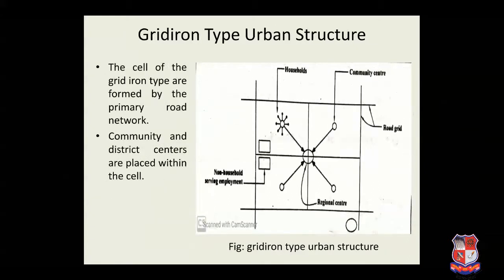The second is gridiron type of urban structure. The cells of the gridiron type are formed by the primary road network. In this figure, the community and district centers are placed within the cell. The regional centers are located at the intersection of the main grid, and trips are easily accommodated. Examples of this type of urban structure are New York and Chandigarh.